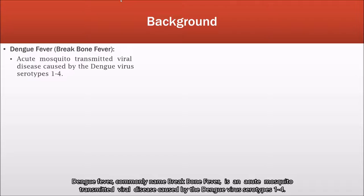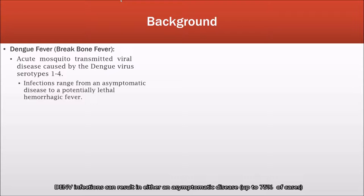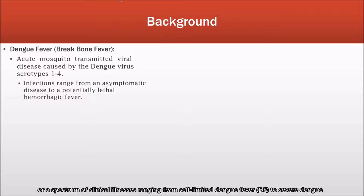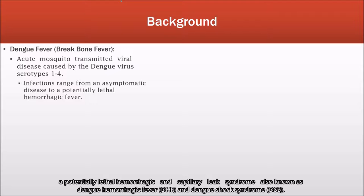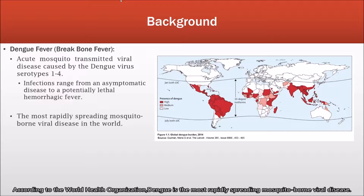Dengue fever, commonly known as break bone fever, is an acute mosquito-transmitted viral disease caused by the dengue virus serotypes 1 through 4. Dengue infections can result in either an asymptomatic disease in up to 75% of cases, or a spectrum of illness ranging from self-limited dengue fever to severe dengue — a potentially lethal hemorrhagic and capillary leak syndrome, also known as dengue hemorrhagic fever and shock syndrome.